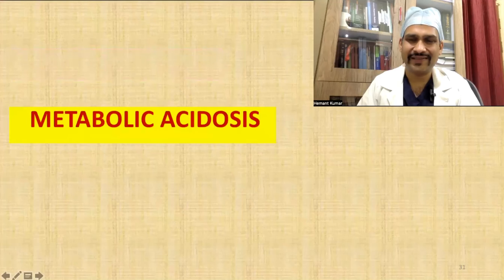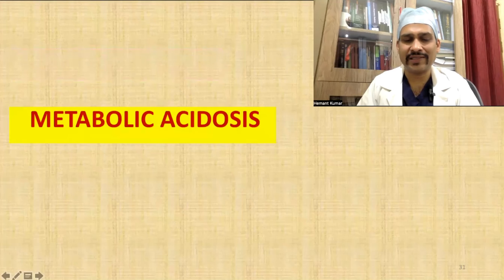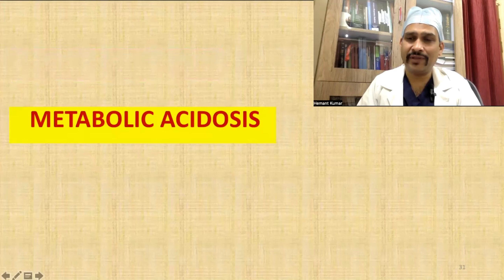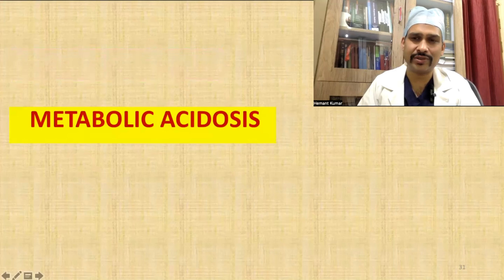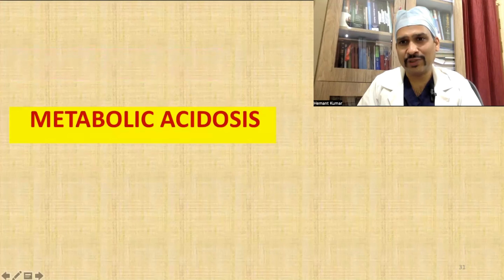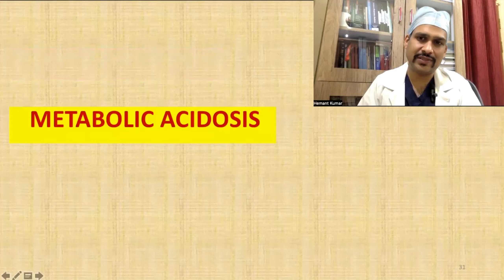Hello friends, welcome to part 2 of our arterial blood gas analysis. In part 1, we discussed some technical issues, the 7 steps of ABG, respiratory acidosis and respiratory alkalosis.